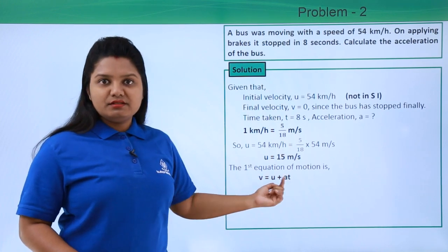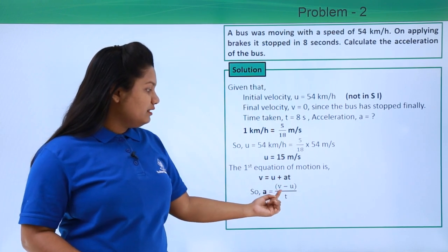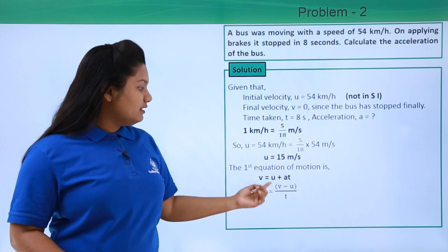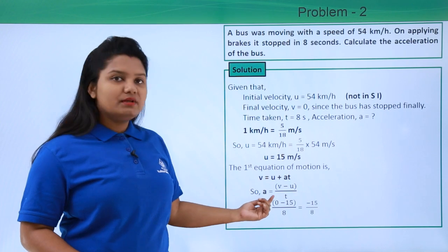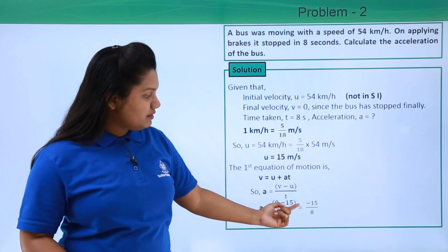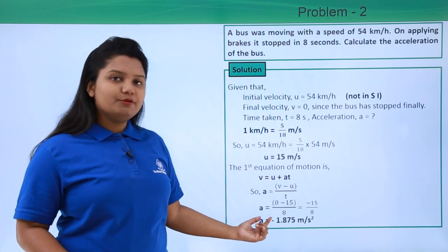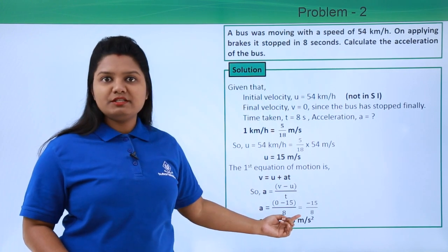So we'll figure out what is acceleration here. That is, a equals v minus u divided by t. Now let us substitute all these values. On doing that, we have a equals 0 minus 15 divided by 8, which yields minus 15 divided by 8. Finally, we get acceleration to be minus 1.875 meters per second squared.